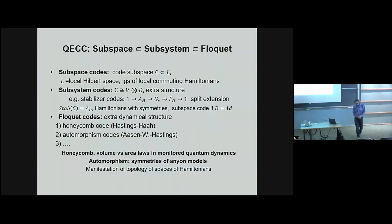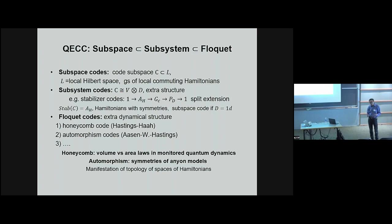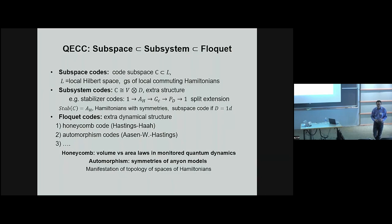If you think about the history of error correction codes, I would call the first kind of code invented by Peter Shor a subspace code. What that means is you have a local Hilbert space — think about your spin degree of freedom — and a local Hamiltonian with commuting projectors. The code subspace is the ground state. Famous examples include the Kitaev quantum double model, the Levin-Wen model, and the toric code.